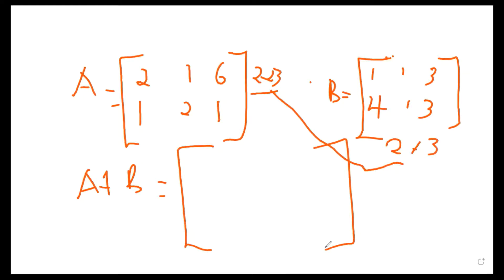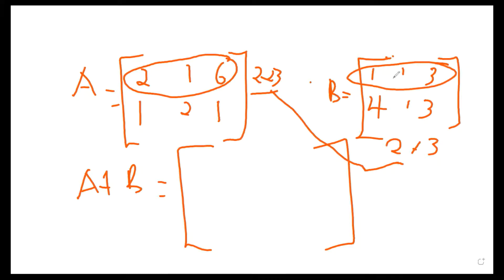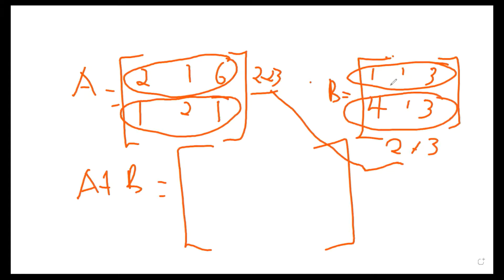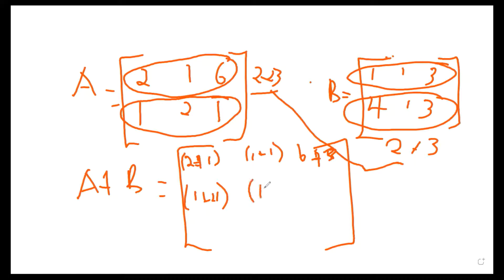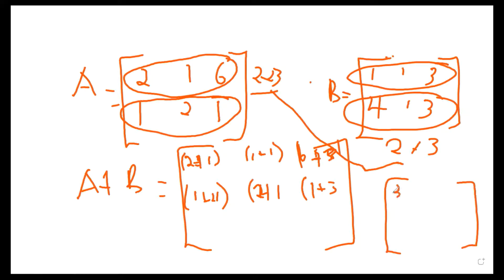By adding, I pick the elements in row 1 of matrix A and add them to the elements of row 1 in matrix B. Similarly, row 2 of A plus row 2 of B. So: 2+1=3, 1+1=2, 6+3=9 for row 1; and 1+4=5, 2+1=3, 1+3=4 for row 2.